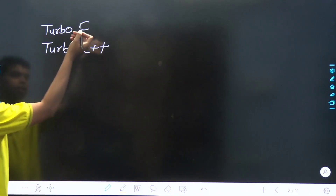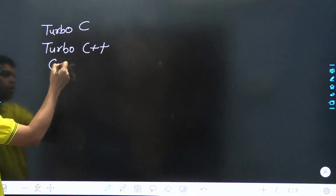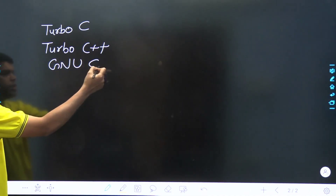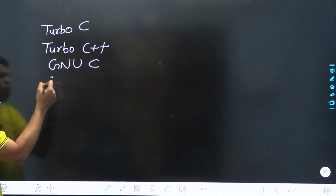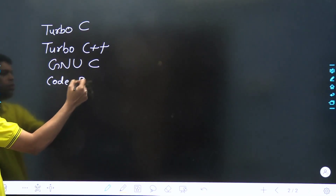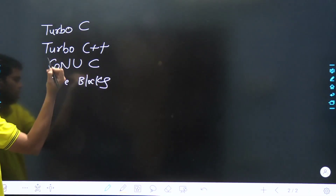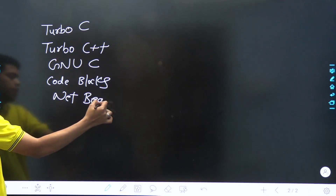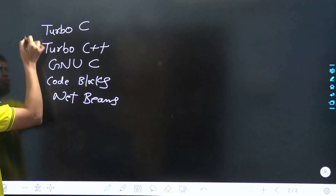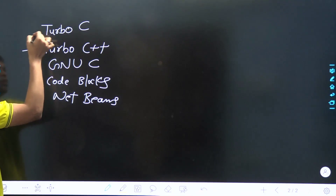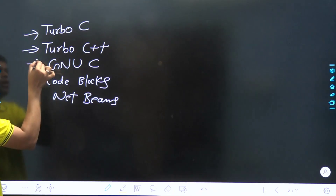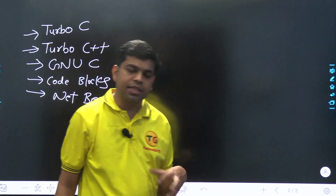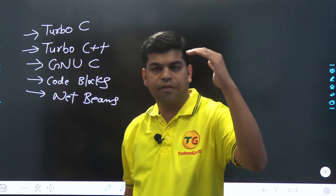Other than Turbo C, there are various newer compilers like GNU C, Code Blocks, and NetBeans — we can also use NetBeans to execute C programs. These are the various C compilers used to execute any C programs.